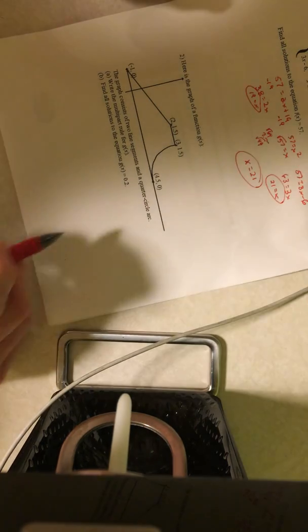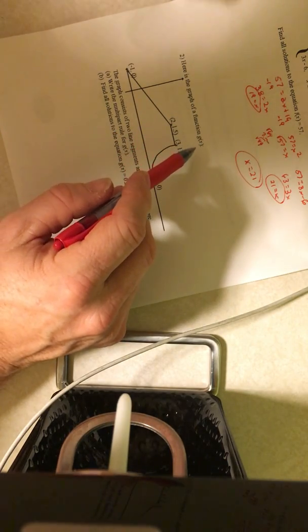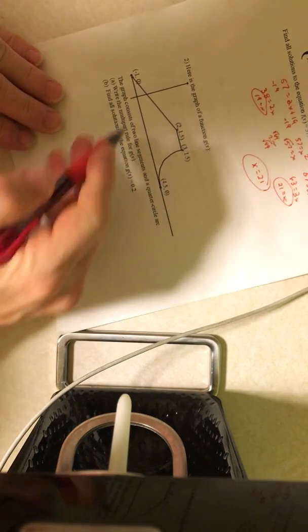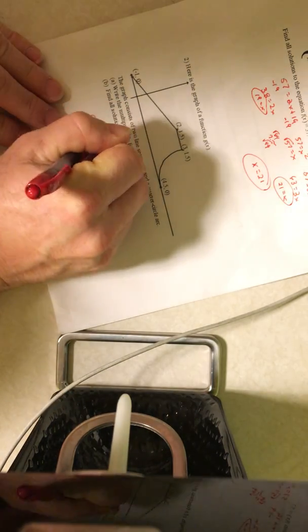Part 2 says, here's the graph of our number 2, here's the graph of the function g of x. The graph consists of two line segments and a quarter circle arc. Write the multi-part rule for g of x. So I have g of x.